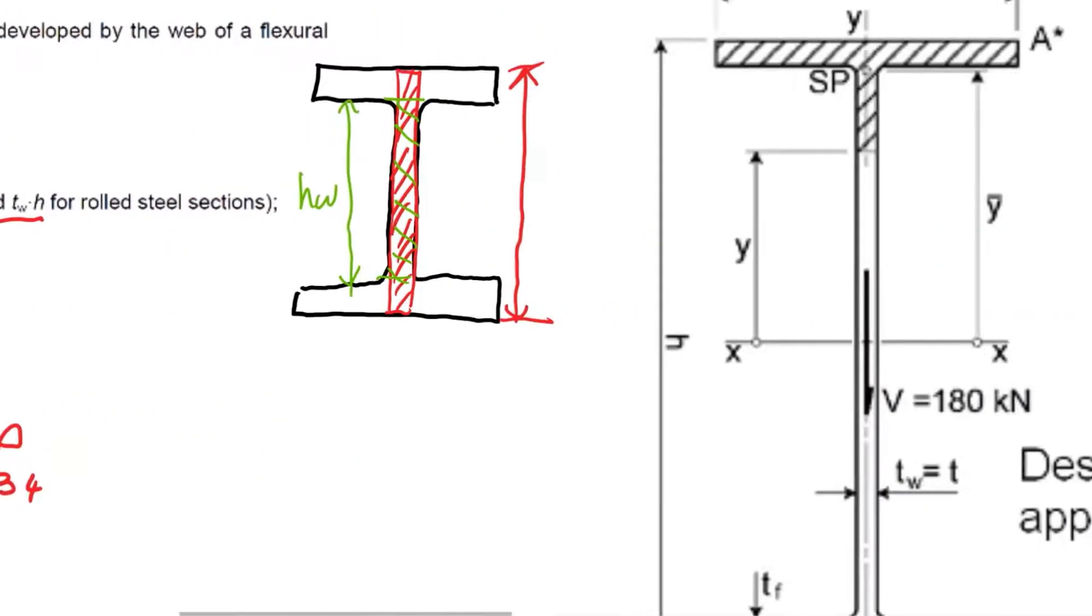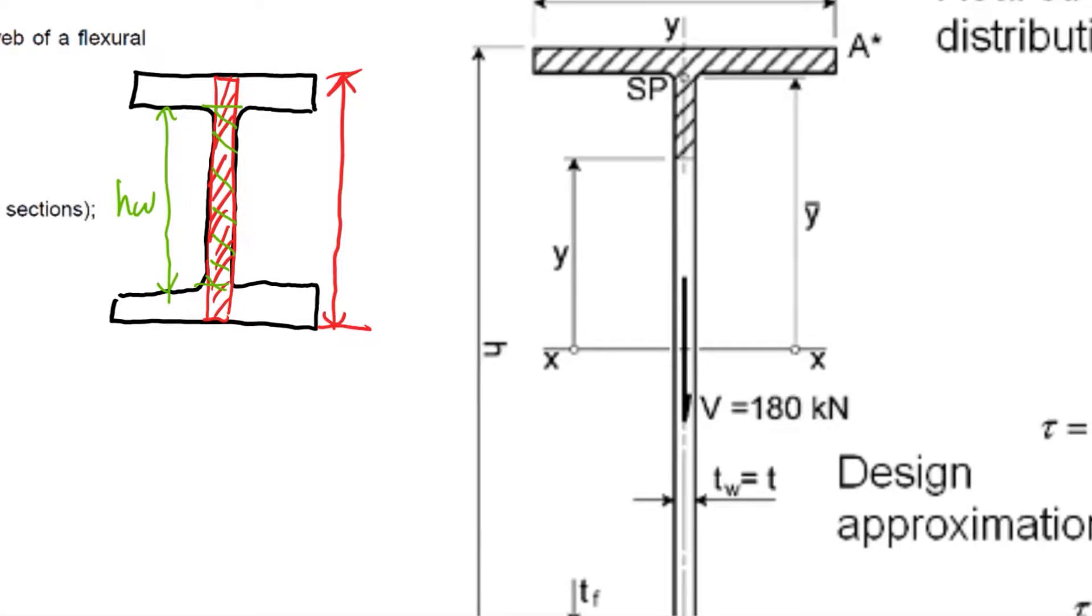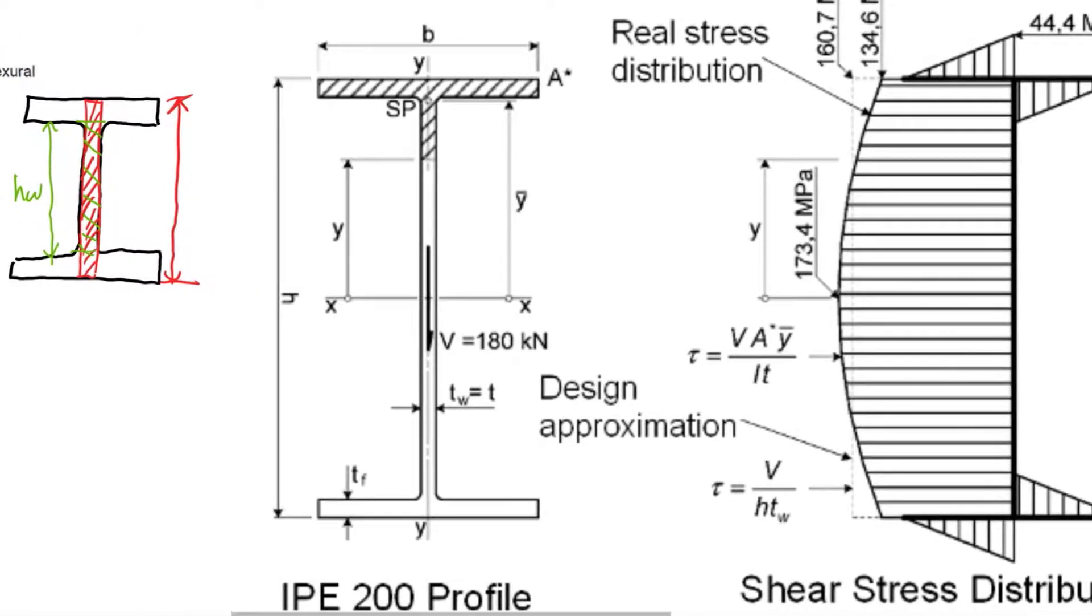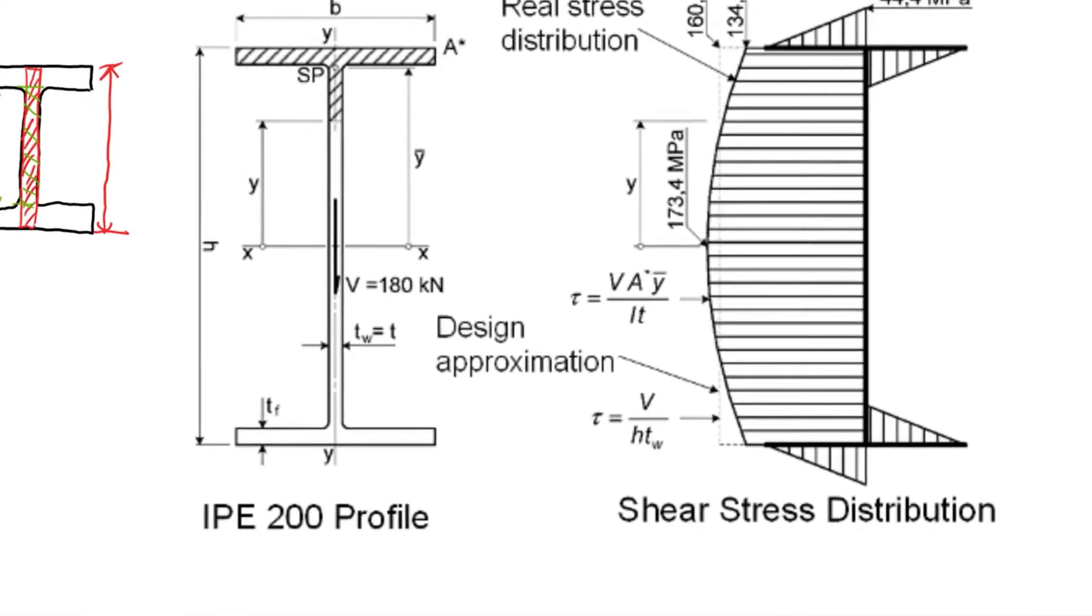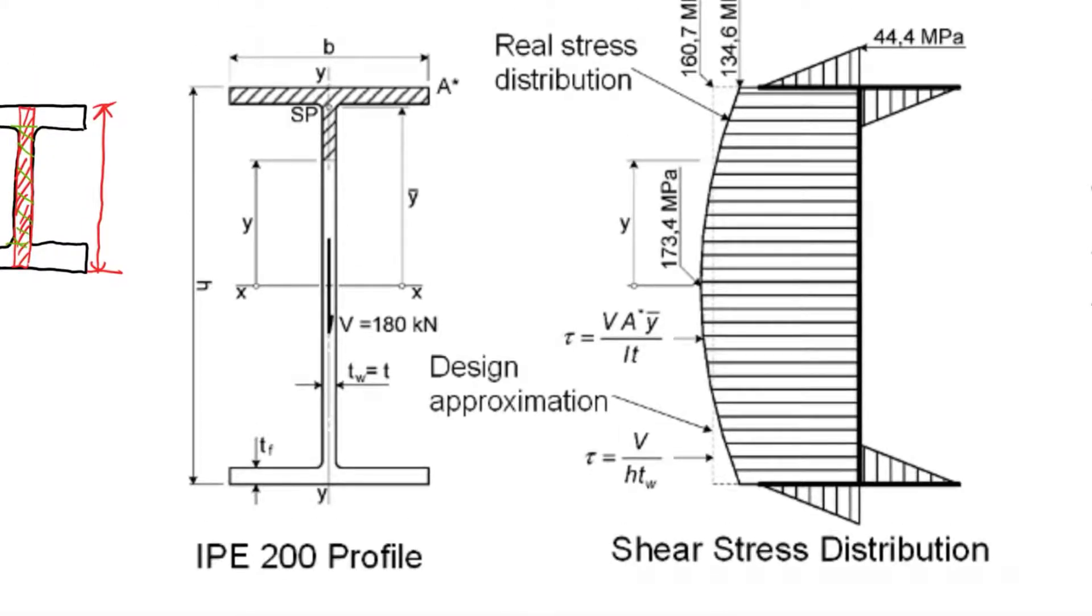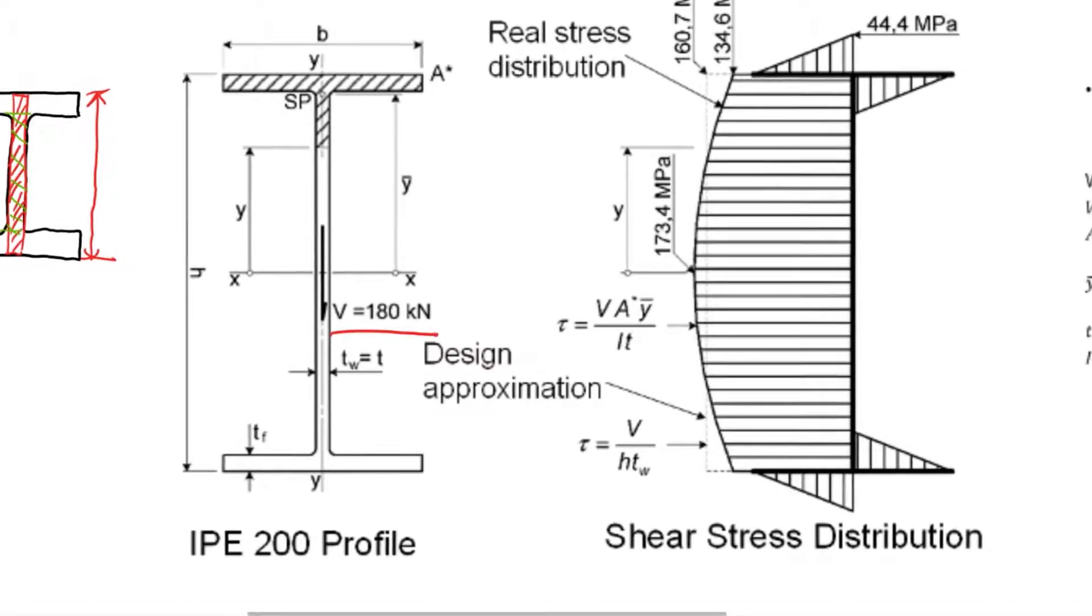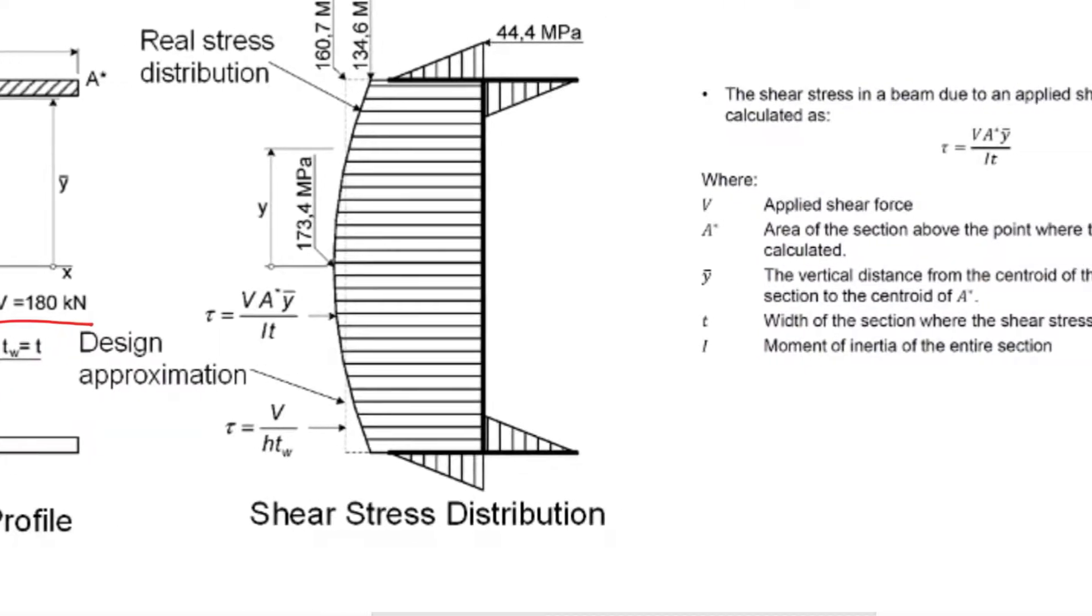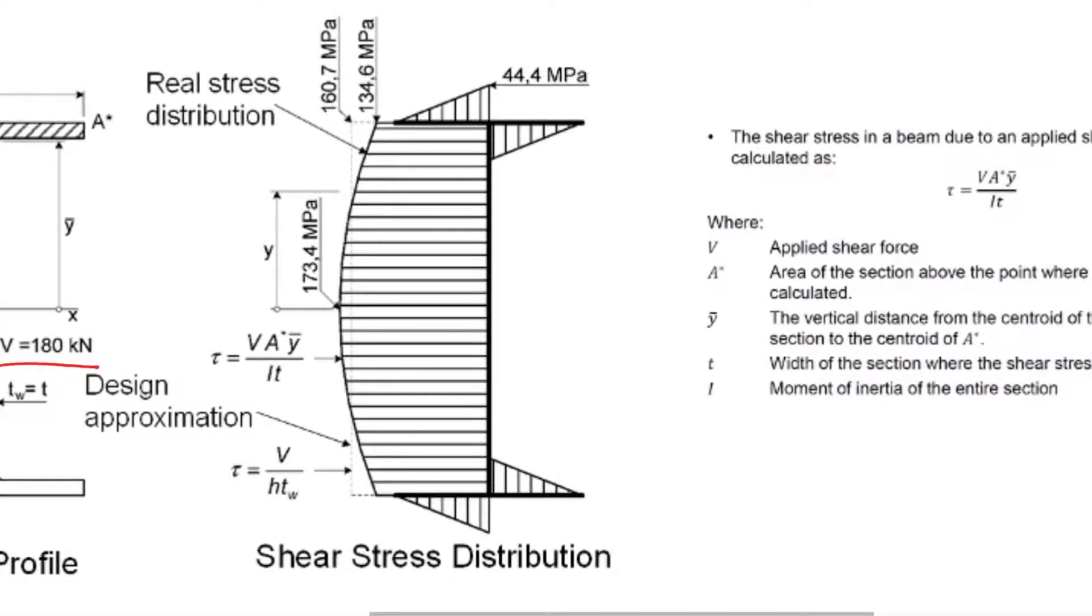In terms of the design, how come we define the shear area as that middle section? Well, let's say now you took an I-beam. This is a design example: you've an IPE 200 profile and you apply a load of, let's say, 180 kilonewtons to it. If you plot the shear stresses in the section you will have a distribution that looks as shown here.